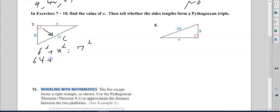So 64 plus x squared equals 289. Now this time we're not adding, we're going to subtract 64 and get 225. And then when we take the square root of 225, we end up with 15. So the answer is yes, it is an 8-15-17 triple.